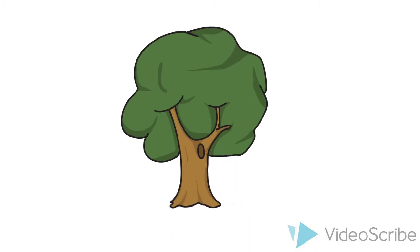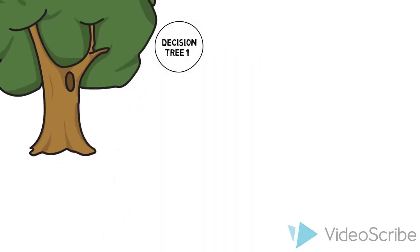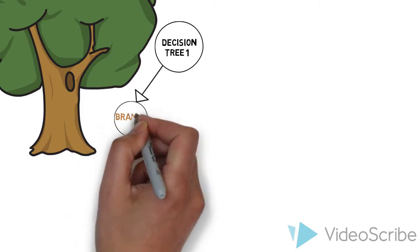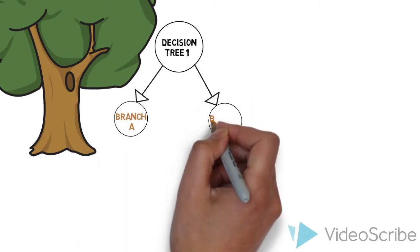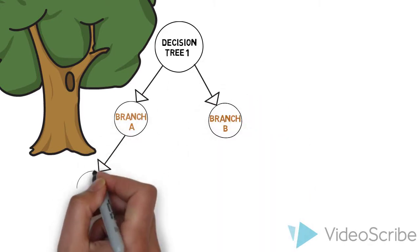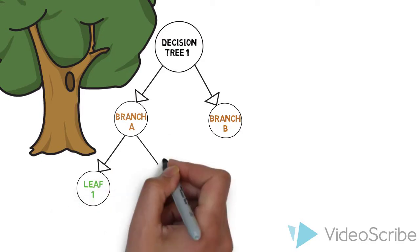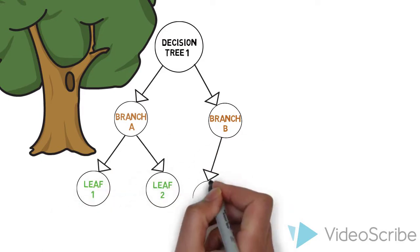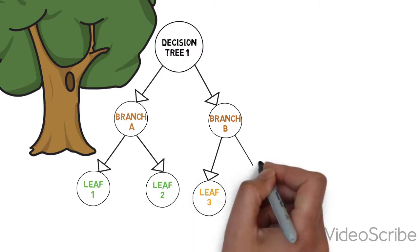A decision tree is an algorithm that can be used to perform both classification and regression tasks. It works by sequentially partitioning the dataset based on a series of rules until we have split the data by their independent variables in a way which should be able to predict or classify our dependent variable.